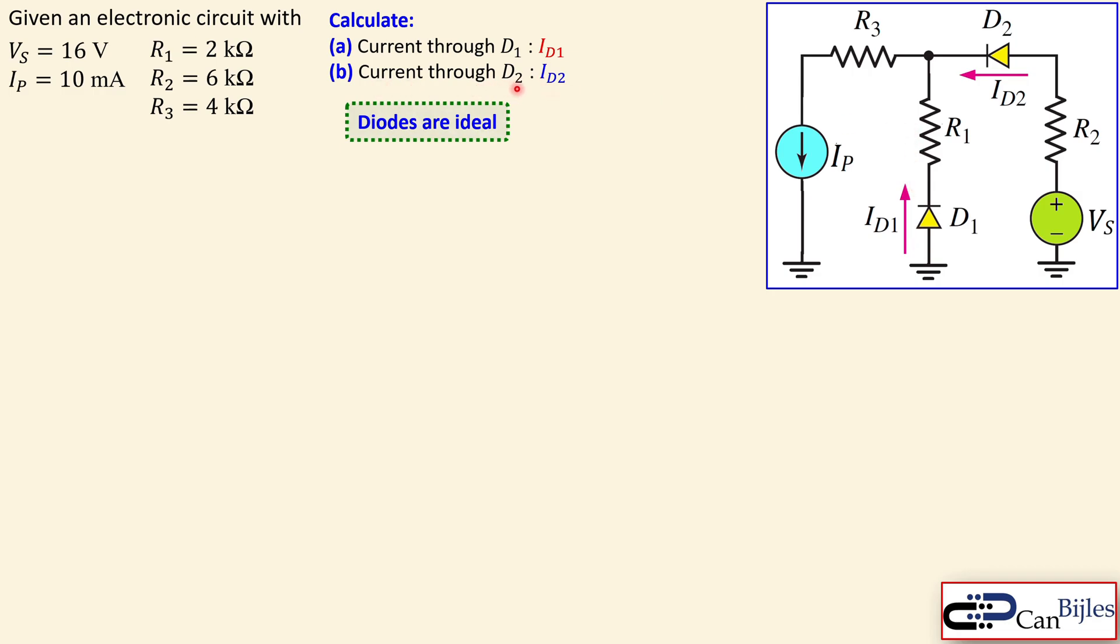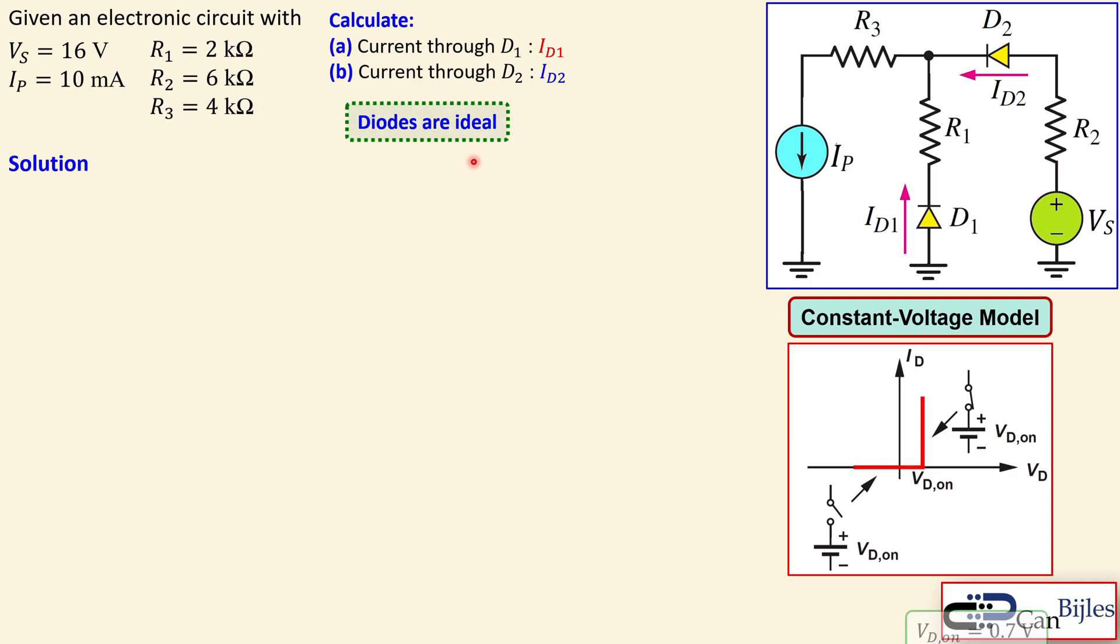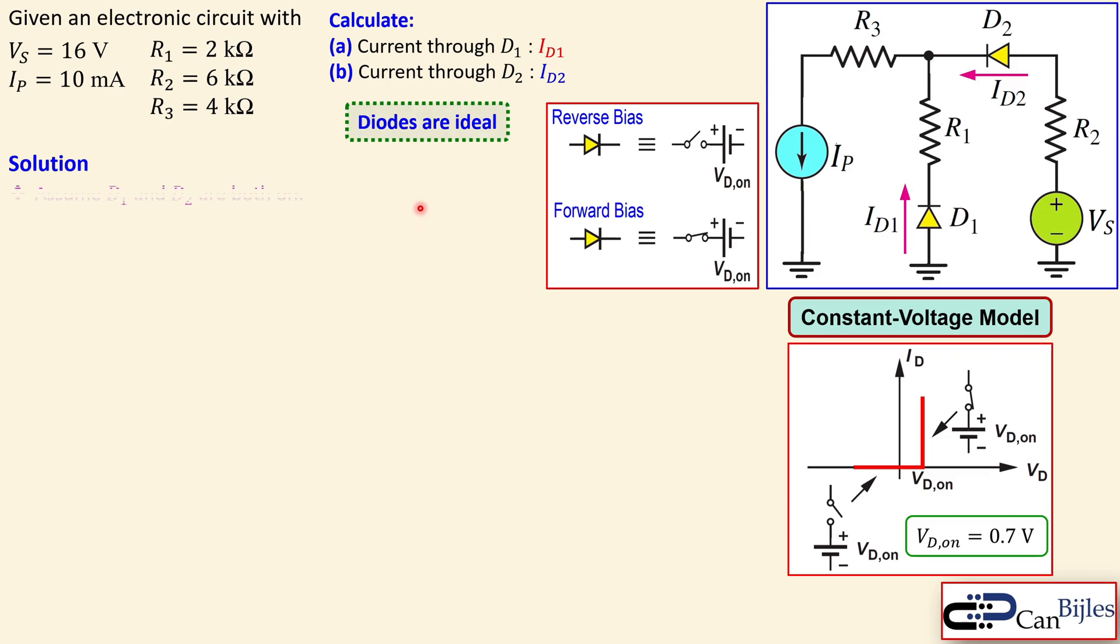The diodes are considered to be ideal but we will use the constant voltage model. We have the reverse biasing and the forward biasing. Reverse bias means the diode is an open circuit, and forward biased means you will have a battery which is VD on value, which is 0.7. So we will replace the diode by an open circuit when reverse biased, or by a battery with a value of 0.7 when forward biased.